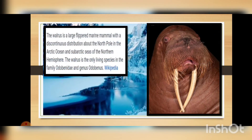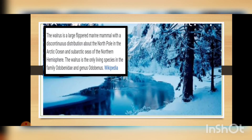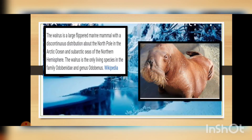The next animal is the walrus. The walrus is a large flippered marine mammal with a discontinuous distribution about the North Pole in the Arctic Ocean and sub-arctic seas of the northern hemisphere. The walrus is the only living species in the family Odobenidae and genus Odobenus. Here you can see another picture of a walrus — its look is a bit different from the previous one.